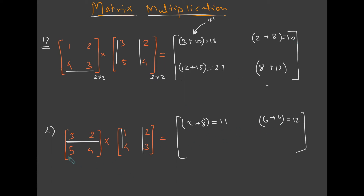Then multiply the second row with the first column: 5 times 1 is 5, and 4 times 4 is 16, giving 21. Then multiply the second row with the second column: that gives 10 plus 12, and the answer is 22. The answers are completely different from the first example, confirming that matrix multiplication is not commutative.